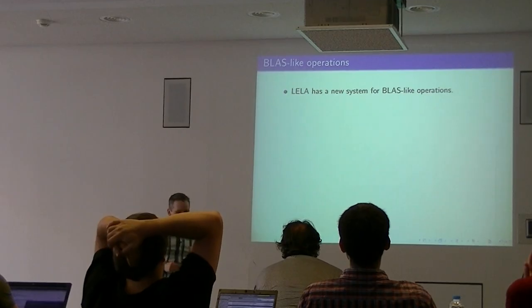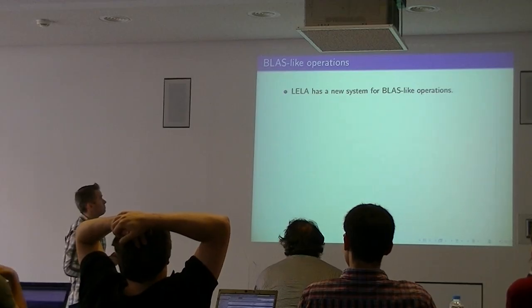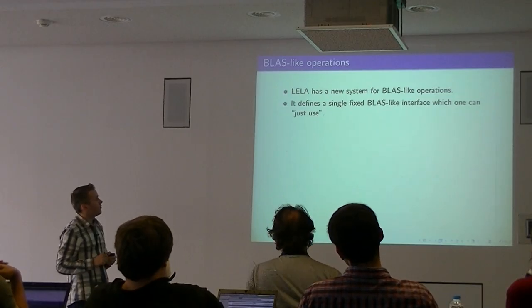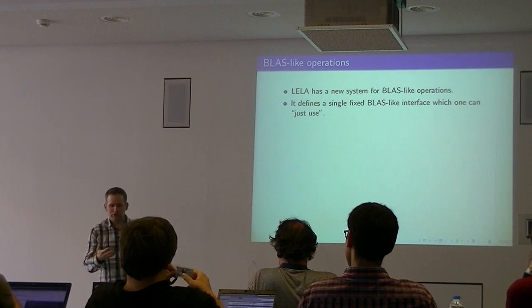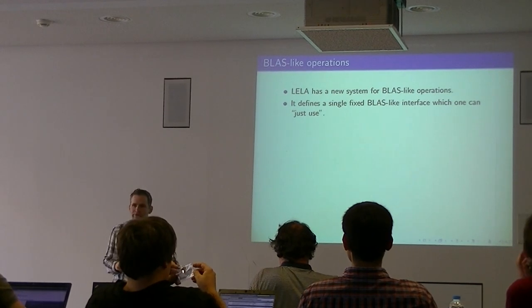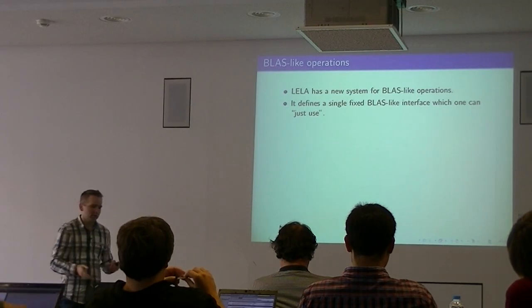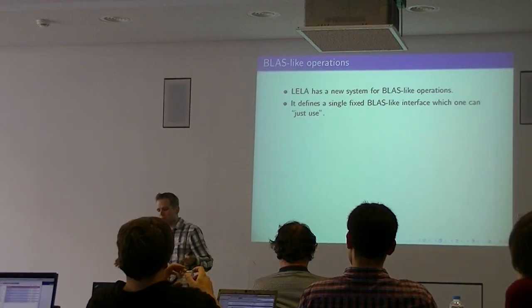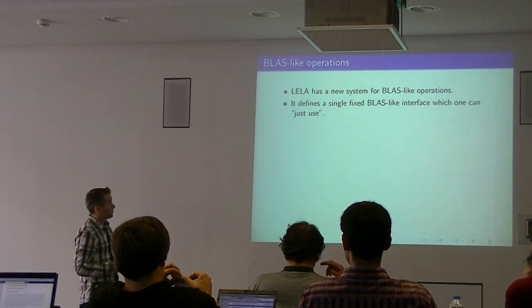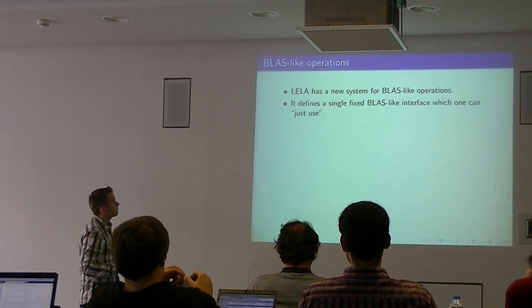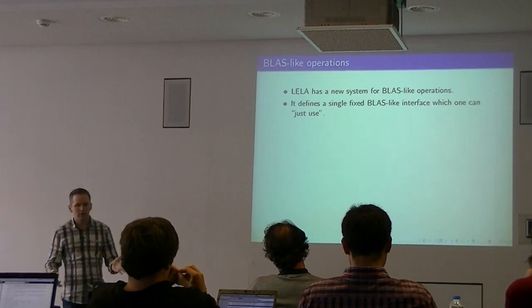Layla has done something quite similar to what was discussed in the previous talk. We have a single fixed BLAS-like interface that one can just use. This means I can take any two matrices that can possibly be multiplied — defined over the same ring with compatible sizes — but with different representation types, one dense, one sparse, or even just a class that adheres to the matrix interface. One can feed any two of these into a single function and get the product. You don't have to think at all about which interface to use in what situation.